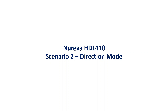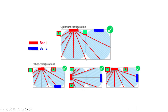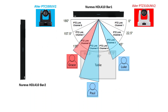Now we are going to see scenario 2: direction mode. Similar setup — here we have Noreva HD0410 bar 1 in front, Noreva HD0410 bar 2 on the side wall, a PTC camera, and a PTZ camera at a different angle. In direction mode, we equally divide 180 degrees into eight channels on PTZ Link, always based on bar 1, which is connected to port 1 on Noreva DSP. From the sky view, the table is in the center, bar 1 in front, bar 2 on the side wall, and we have two cameras.